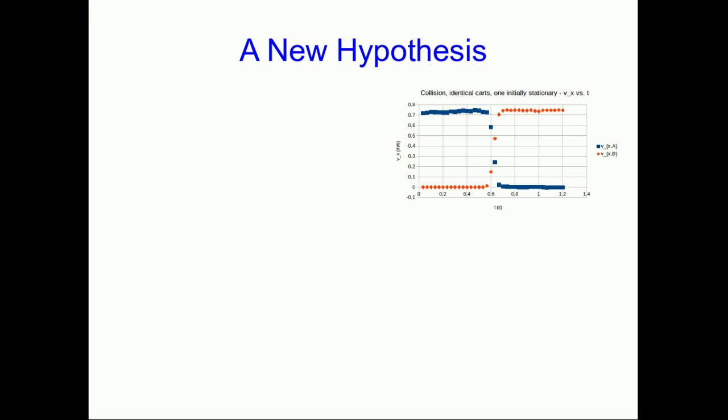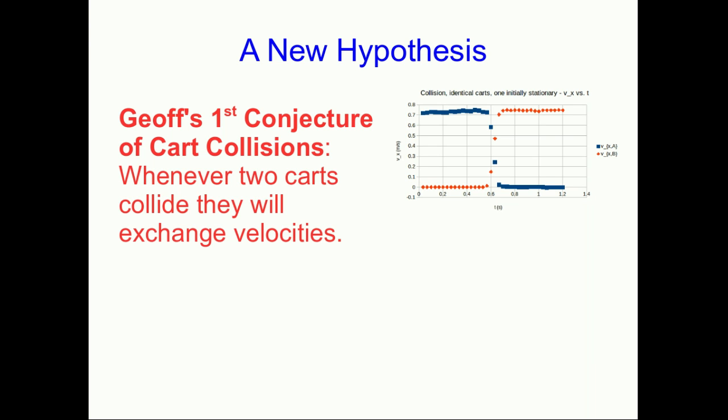Well, what if this is a general rule? Why don't we make this a hypothesis that we can test? Sometimes when we have a hypothesis that we're really tentative about, we're not at all sure whether it's true but we're just throwing it out there to see what happens, we'll call it a conjecture. Here's Jeff's first conjecture of cart collisions: whenever two carts collide they will exchange velocities. We can test that.